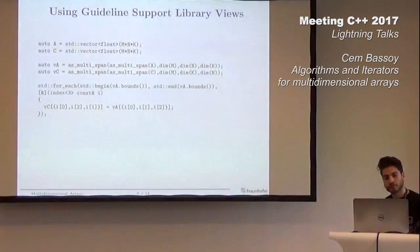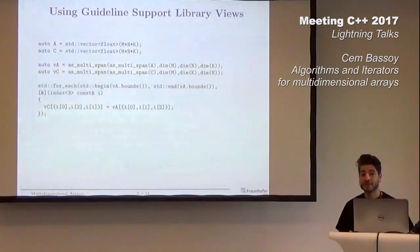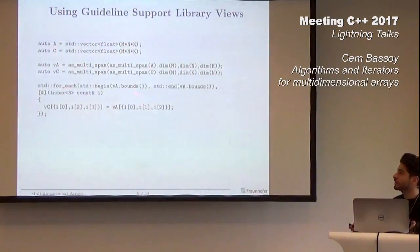This has been implemented in the guideline support library. You take your std::vectors and transform them into a view or multi-span. You need to define your dimensions. What's very nice is that you can now use bounds with standard algorithms to access your elements without writing all the for loops.